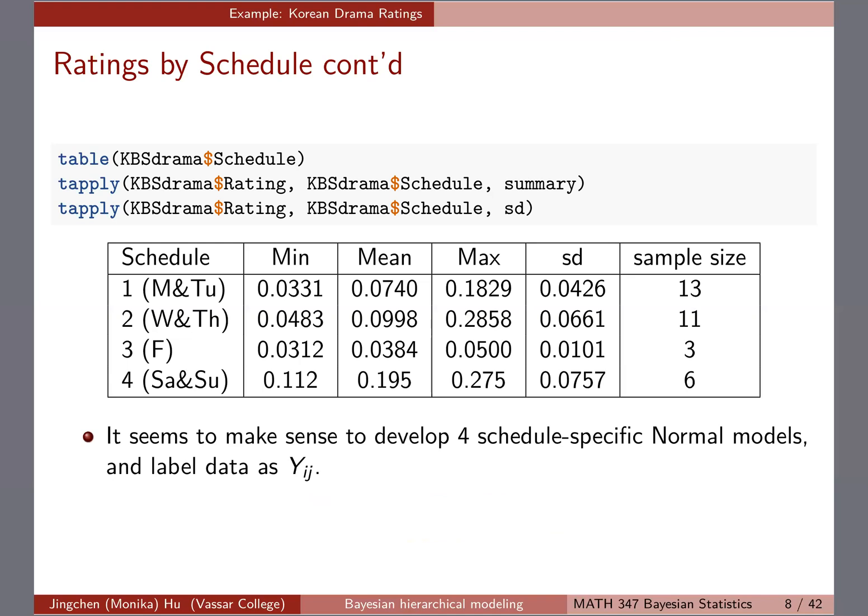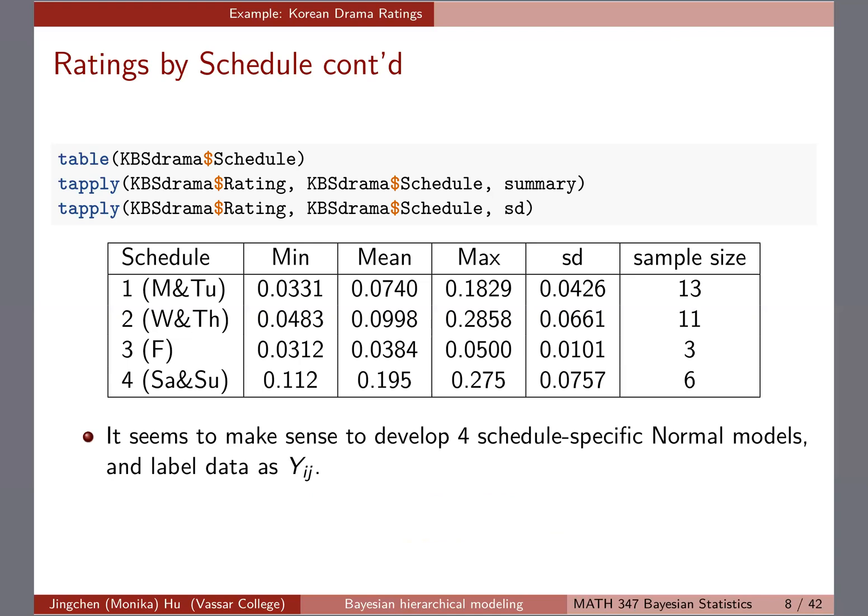Based on the plot as well as the table of summary statistics, it probably makes sense to develop four schedule-specific normal models. Looking at the plot, even though schedules one and two might share similar mean and variance, the other ones have means that are pretty off, especially for number three.